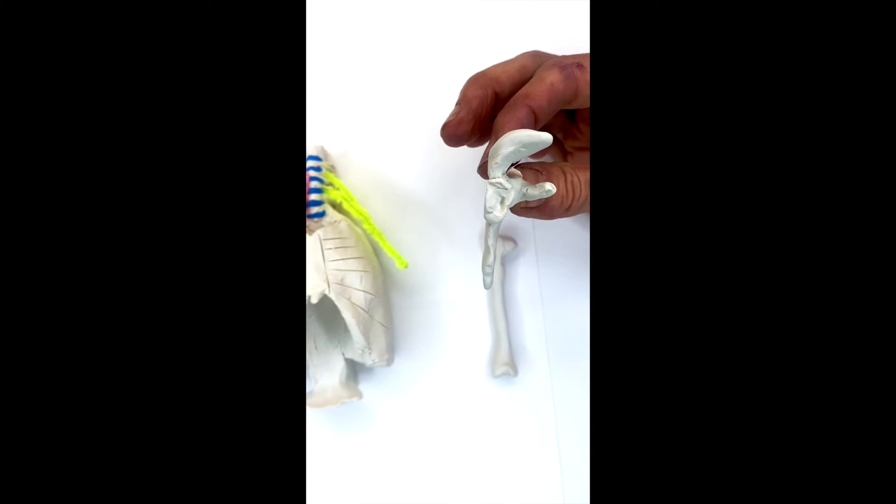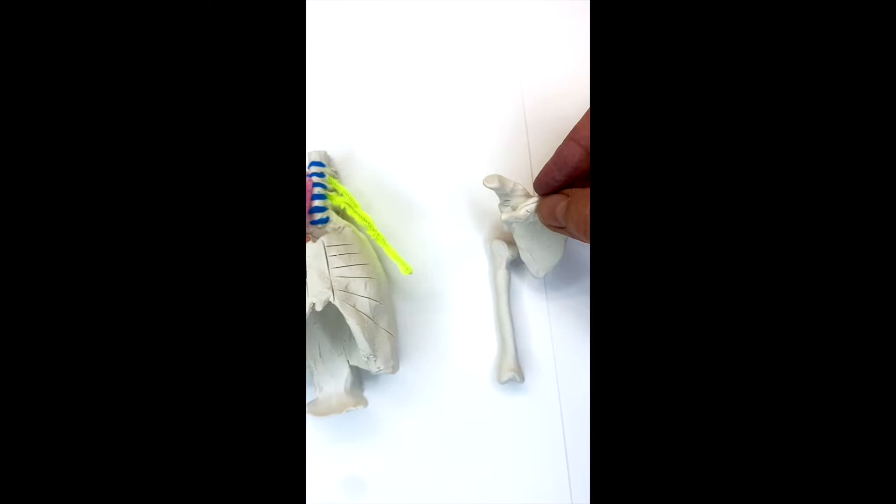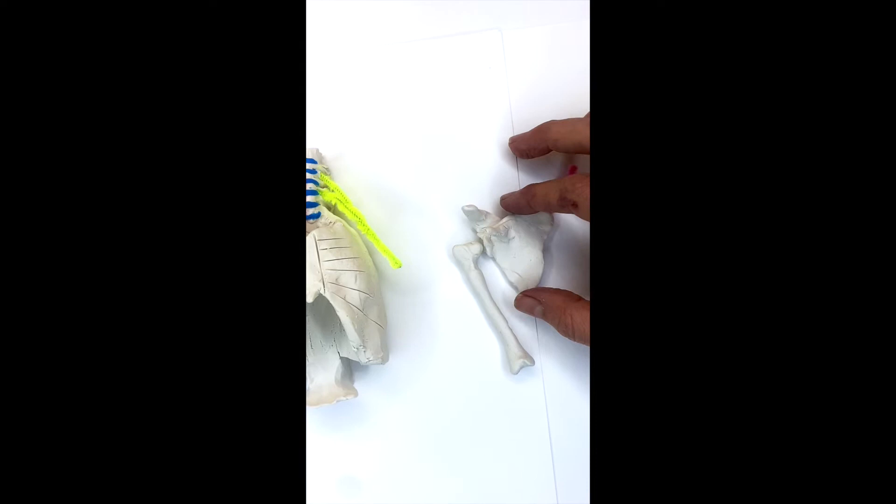And then this is the coracoid process. So if you look at it from the side, you can see this knob sticking out right here. And that's one of the things that can cause some problems with the brachial plexus. I'll show you why.